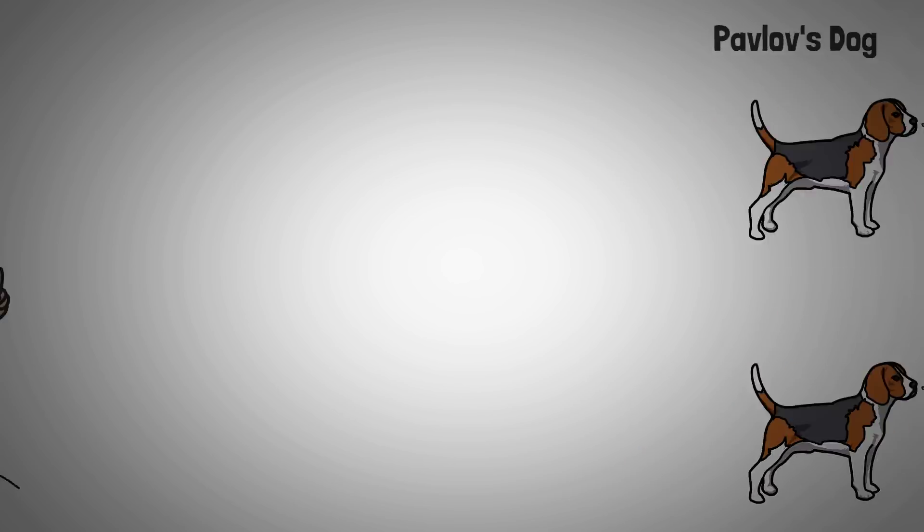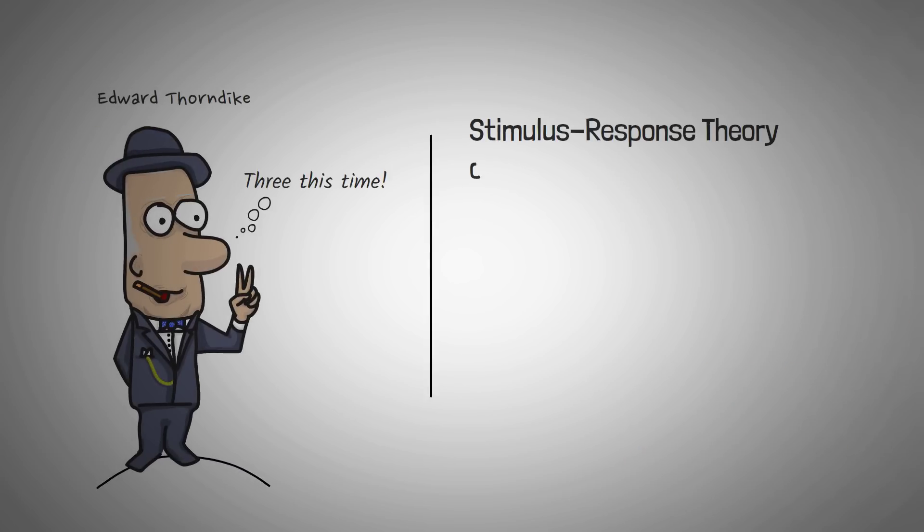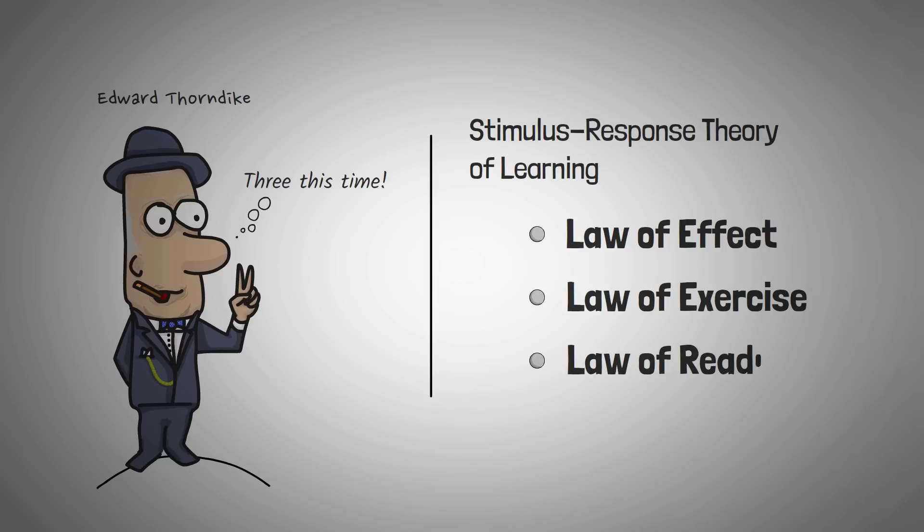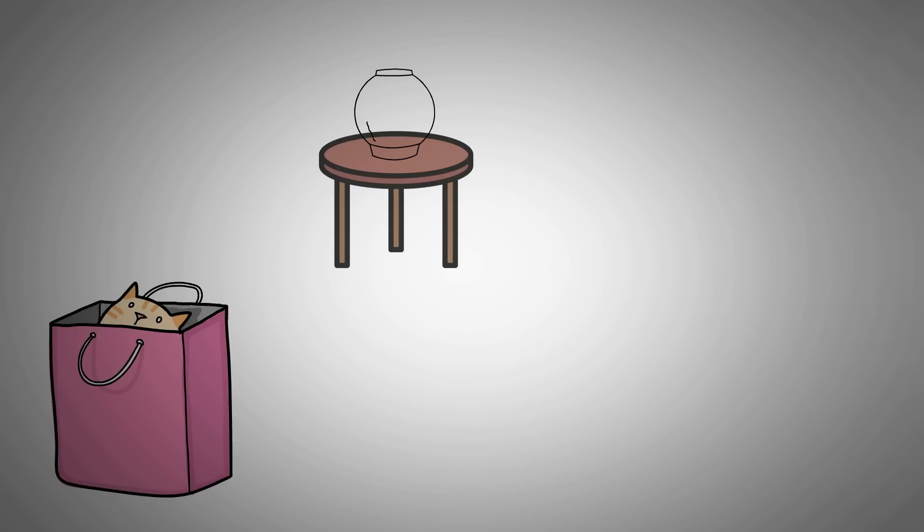Let's look at three concepts that Thorndike developed while explaining the stimulus-response theory of learning: law of effect, law of exercise, and law of readiness. Before Pavlov worked with dogs, Thorndike worked with cats. He would place them in a box. Outside the box was a scrap of fish.